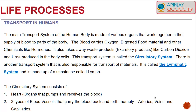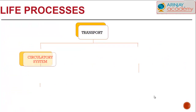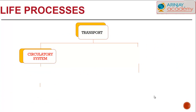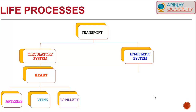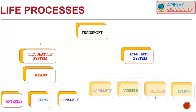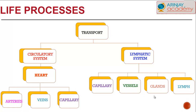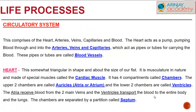The circulatory system comprises the heart, which is responsible for pumping and receiving blood, and the three blood vessels — arteries, veins, and capillaries. The lymphatic system, which also handles transportation, is made up of capillaries, vessels, glands, and lymph.